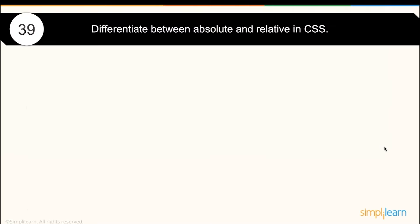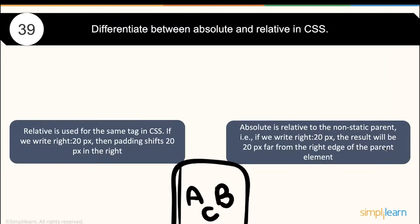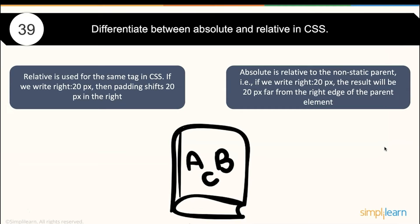What is the difference between absolute and relative positioning in CSS? Relative is useful for shifting tags — if you write right: 20px, the element shifts 20 pixels to the right. Absolute, however, is relative to the nearest non-static parent element — meaning right: 20px places the element 20 pixels from the right edge of the parent element. That is the difference between relative and absolute positioning.